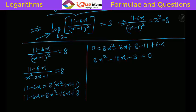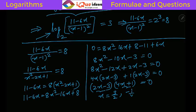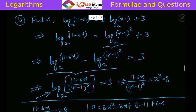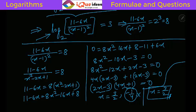Factorizing 8x^2 − 10x − 3: since 8×3=24 and 12×2=24 with difference 10, split as 8x^2 − 12x + 2x − 3 = 0. Taking 4x common: 4x(2x−3) + 1(2x−3) = 0, giving (2x−3)(4x+1) = 0. So x = 3/2 or x = −1/4. Since x−1 in the original log cannot be negative, x = −1/4 is discarded. The correct answer is x = 3/2.